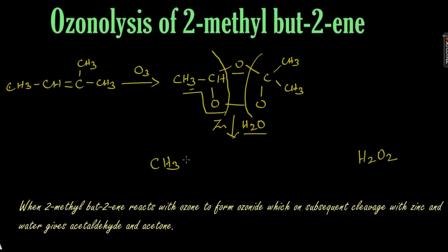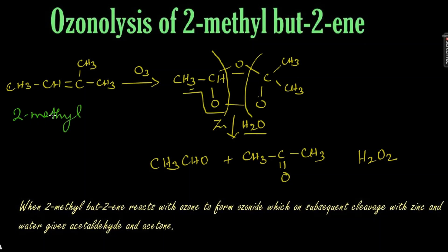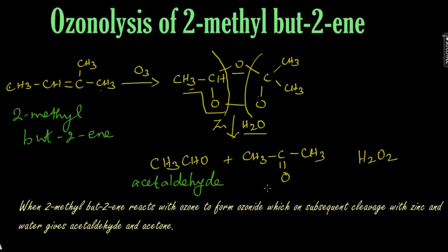The remaining products are CH3-CHO, that is acetaldehyde, plus CH3-CO-CH3, that is acetone. Let's write the names for these structures. This is 2-methylbut-2-ene — four carbons so 'bute', with a methyl group at the second carbon and a double bond at position 2. We get acetaldehyde and acetone.